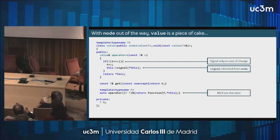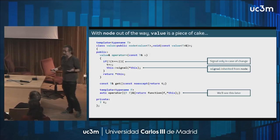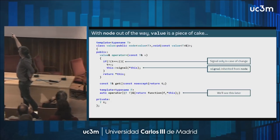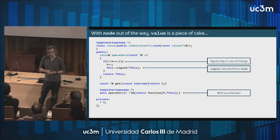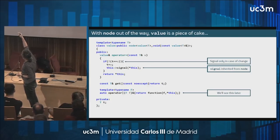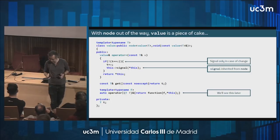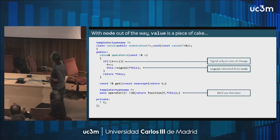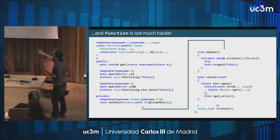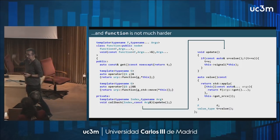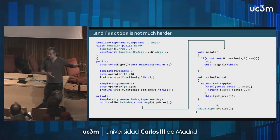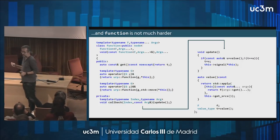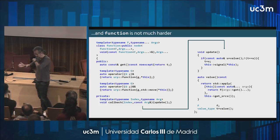Once we have nodes done, implementing value and function is relatively easy. For value, I implement the assignment operator: when assigned a new value I compare it with what's stored, and if the value is different I ask the base-class node to emit a signal. For function, whenever a new value arrives from a source, the node framework calls back, I update the value calculated as a function of my sources' values, and if the value has changed I instruct the node class to emit a signal so information is propagated.